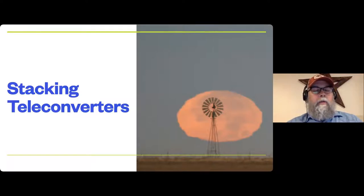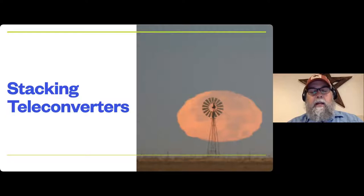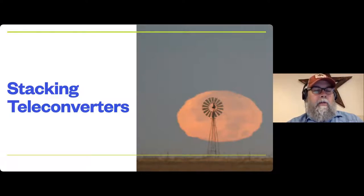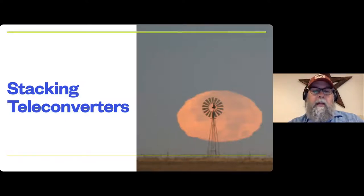Stacking teleconverters also works great when shooting pictures of wildlife that's close up and you need a little more magnification. The downside when you stack teleconverters is you'll lose typically three stops of light, and on most camera bodies you'll lose the ability to autofocus. With a 1.4 converter alone you lose one stop of light, so instead of shooting at 1/500th of a second you may have to shoot at 1/250th. Adding the 2x converter means you lose three stops total, making the whole system slower and requiring manual focus.